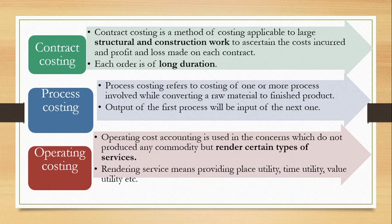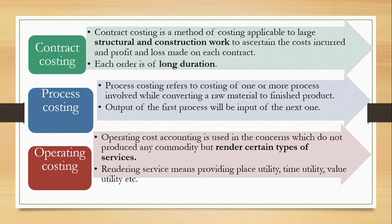Next is process costing. Process costing refers to the costing of one or more processes involved while converting raw material to a finished product. The raw material is not completed in one go — it goes through different processes, and after each process it gradually converts into the finished product. For example, in cloth manufacturing: first cotton is converted to thread, then thread is converted to cloth, and then cloth is made into a shirt. So different processes are involved before the finished product is made.